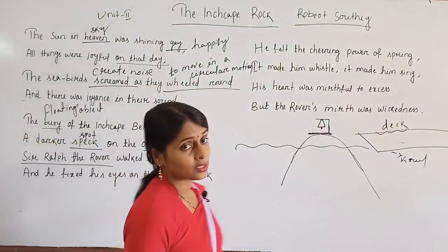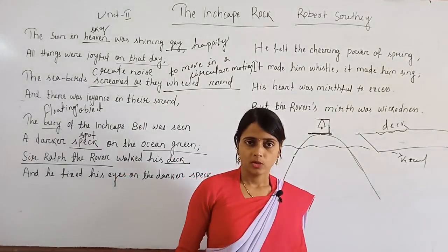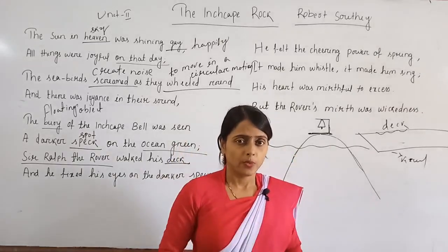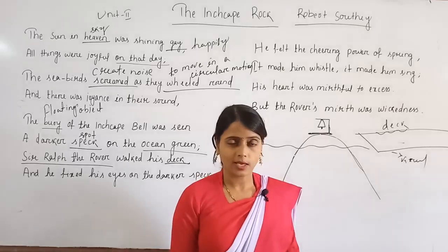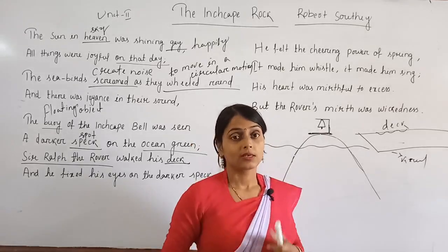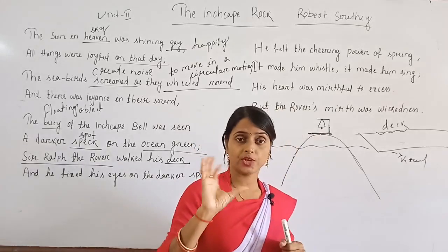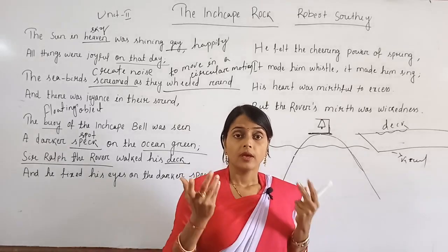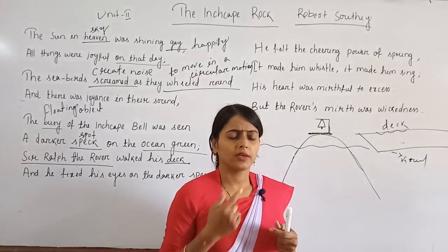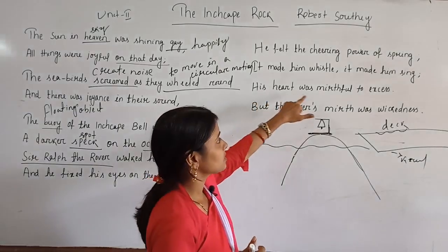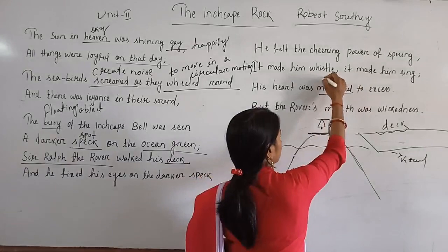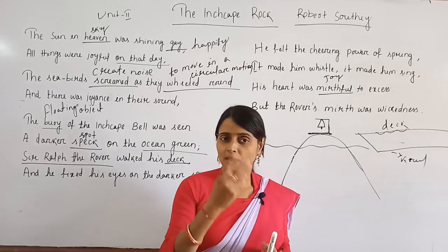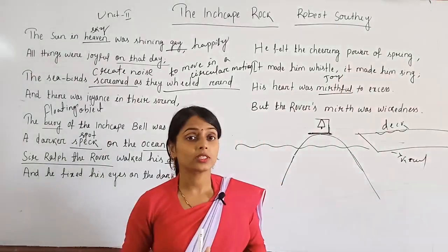The spring season made him whistle and sing. He started whistling out of happiness — whenever you are happy, you whistle and sing. His heart was mirthful to excess; 'mirthful' means full of joy or happiness. There was extreme happiness in his heart, and that is why Sir Ralph was singing as well as whistling.